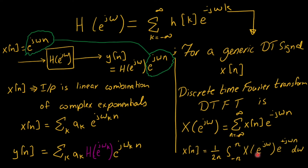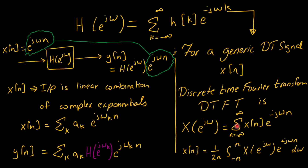The inverse DTFT is the analysis expression: integrating x of e j omega times e to the power plus j omega n, from minus pi to pi, scaled by one over two pi, to recover the discrete time signal x of n. In summary, any discrete time signal x of n can be transformed via the DTFT synthesis expression, and recovered via the inverse DTFT analysis expression.